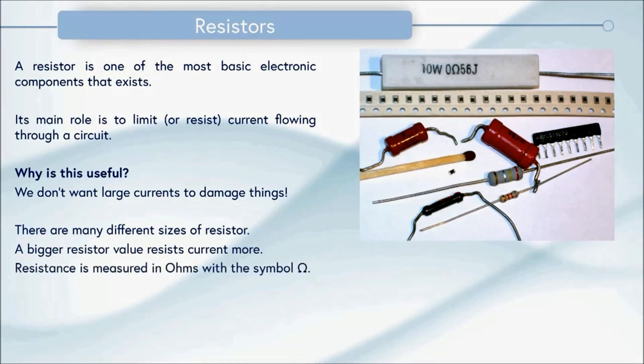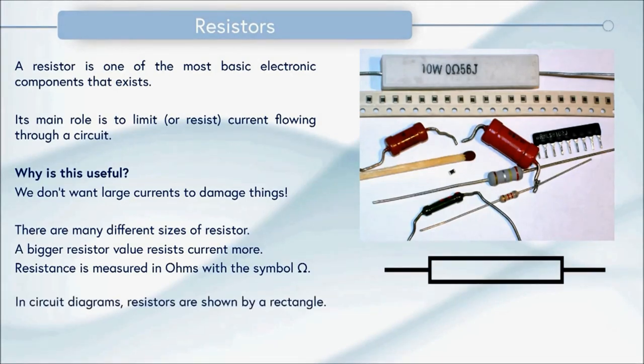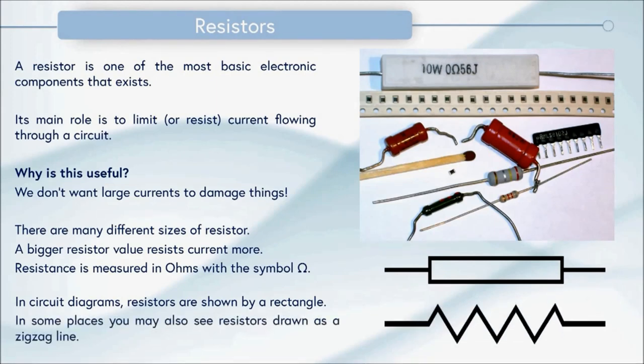There are many different sizes of resistor and a bigger resistor value means it will resist current more. Resistance is measured in ohms with the symbol omega. This is a Greek letter and it's a capital omega. In circuit diagrams resistors are shown by a rectangle. However in some places you may also see resistors drawn as a zigzag line.